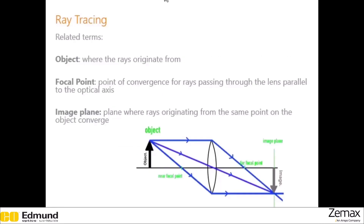Some common terminology we'll be using throughout this video: the object is whatever you're imaging and where the light is originating from. The focal point is where rays parallel to the lens converge. We will be assuming that we know the focal lengths and focal points of all the lenses in this section, which is reasonable because you can easily determine the focal point experimentally by shining parallel rays and seeing where they converge. The image plane is where the image is formed — where you would place a screen to project the image or a sensor to record it — determined by wherever rays from the same object point converge.